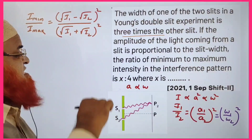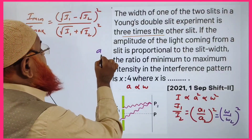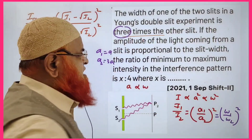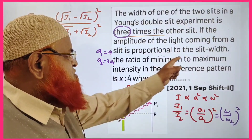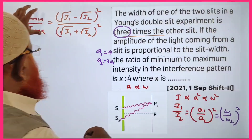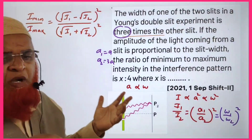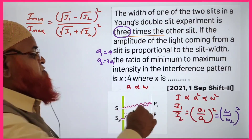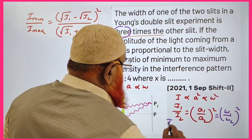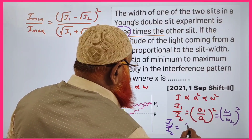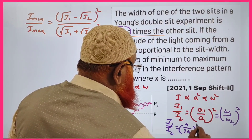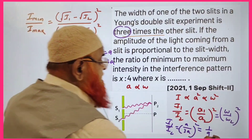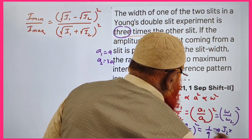It is given that A₁ = A and A₂ = 3A. The question asks us to find the minimum and maximum intensity. Substituting: I₁/I₂ = (A/3A)² = 1/9, which implies I₂ = 9·I₁.